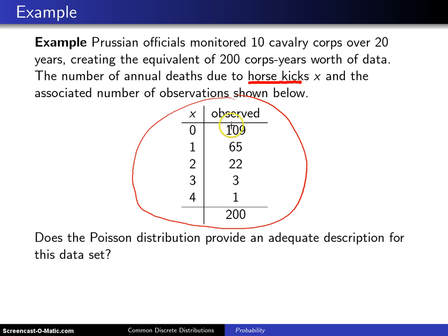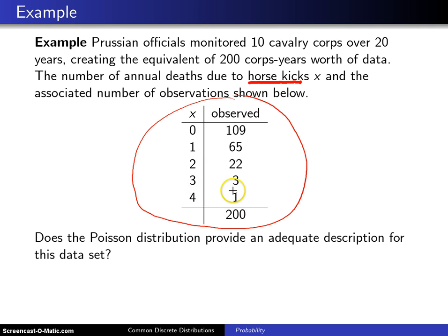It turns out 109 of those data values are zero — no soldiers got kicked to death in 109 of the corps-years. In 65 of the corps-years, one soldier got kicked to death; 22 had two deaths; 3 had three deaths; and in one of those corps-years, four soldiers were kicked to death by horses.